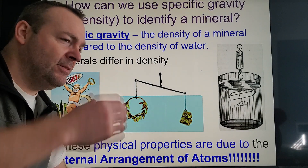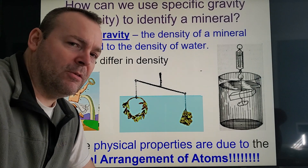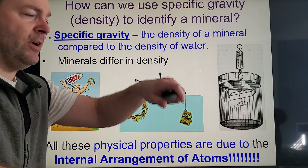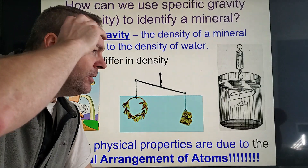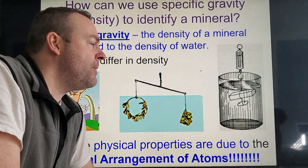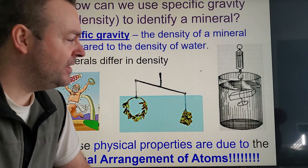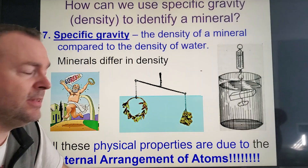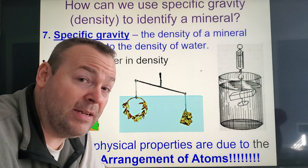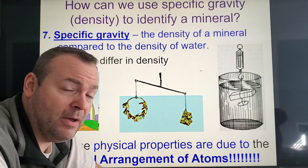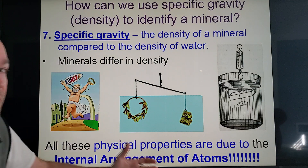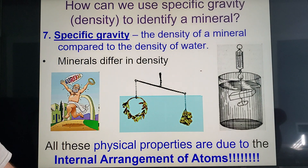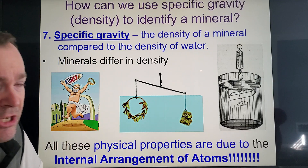Archimedes just couldn't figure out how to find the volume of irregular objects until one night he was getting into his bathtub and as he got in, the water started to rise and spill out. He said, 'Eureka! I figured it out!' You use the displacement method to find volume, a balance to get mass, and then density equals mass divided by volume. Once you find the specific gravity, you can look it up on a chart to identify the mineral.